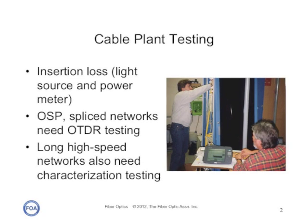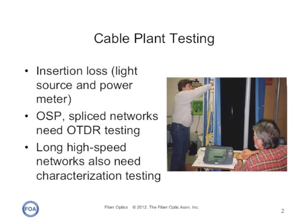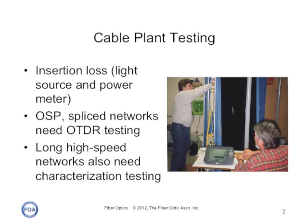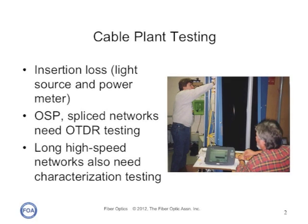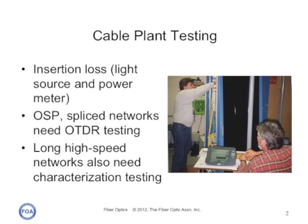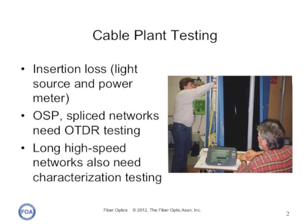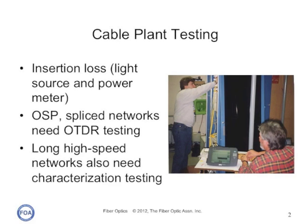Every fiber optic cable plant should be tested by a light source and power meter, called an insertion loss test, because that test mimics the way the cable plant will be used by transmission systems and provides the most reliable test data for ensuring the cable plant will work properly. Outside plant and splice networks will also get OTDR testing, because that verifies the quality of the installation and the performance of each individual splice. OTDR testing can also provide data on reflectance and optical return loss, which is also important for high bit rate systems.